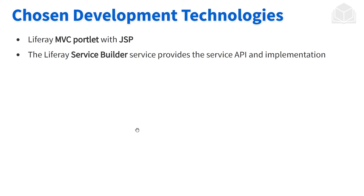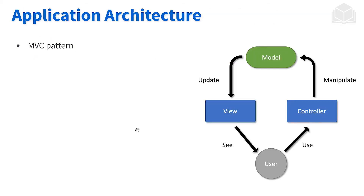The way that we're going to be designing the application is we're going to be using some Liferay technologies and Liferay best practices. We're going to be using MVC Portlet — that portlet class we discussed previously — and we're also going to be using a tool created by Liferay known as Service Builder. Service Builder is going to help us do exactly as it says: help build out our services. As for design pattern, we're going to be using the MVC design pattern, creating the model, the view, and the controller. The model is going to be taken care of by Service Builder, and the view and controller will be our portlet module.